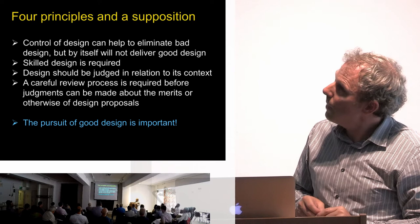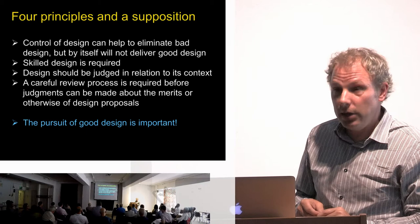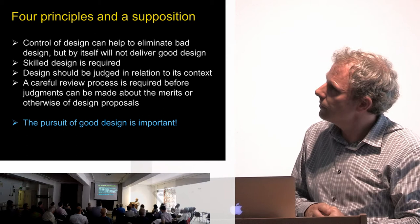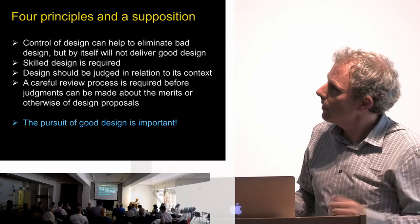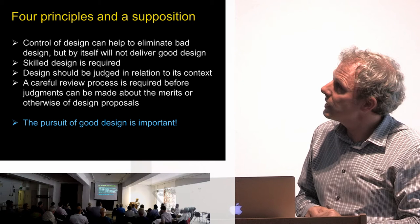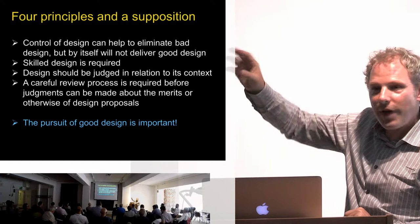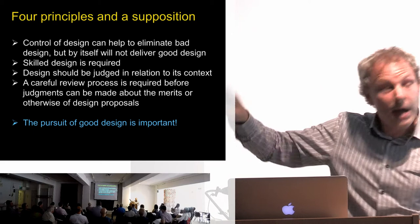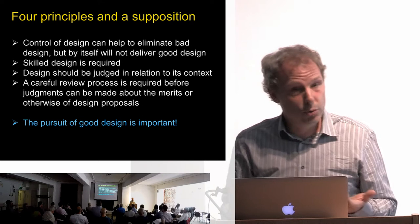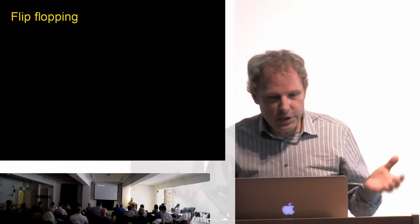First, control of design can help to eliminate bad design, but by itself will not deliver good design — a skilled design process is required; we need skilled designers. Design should be judged in relation to its context. And we need a careful review process before judgments can be made about the merits or otherwise of design proposals. All of that sums up that, at that time, design was considered to be important, and national government should have something to say about it.